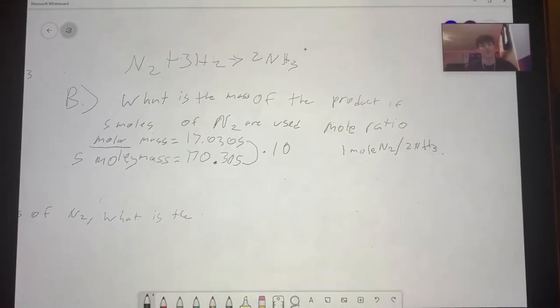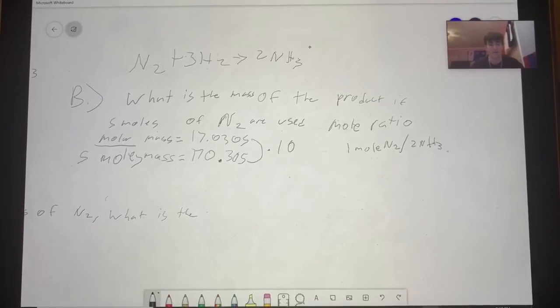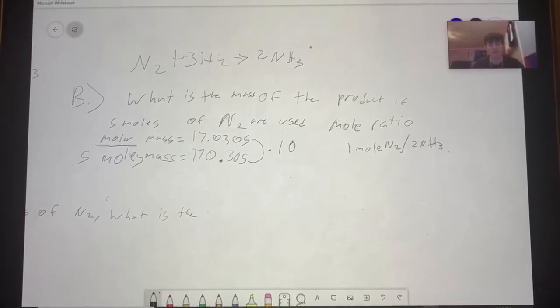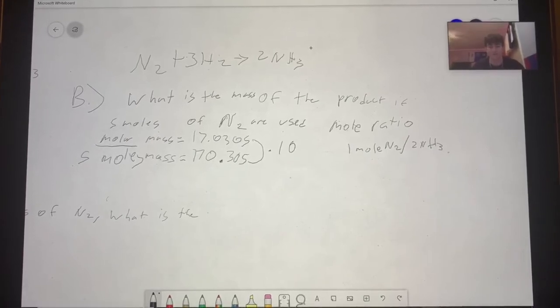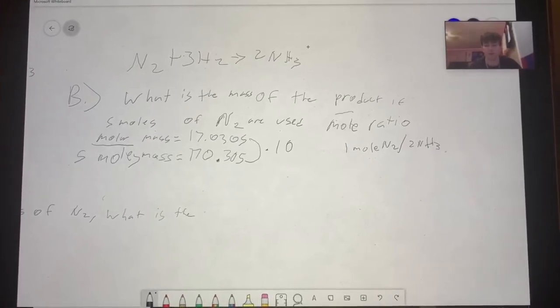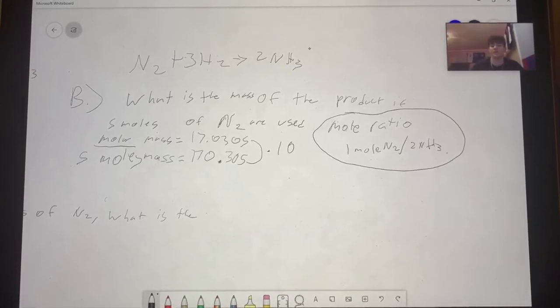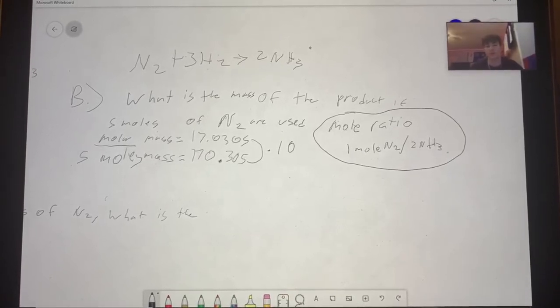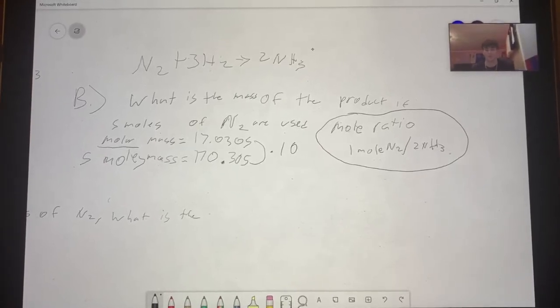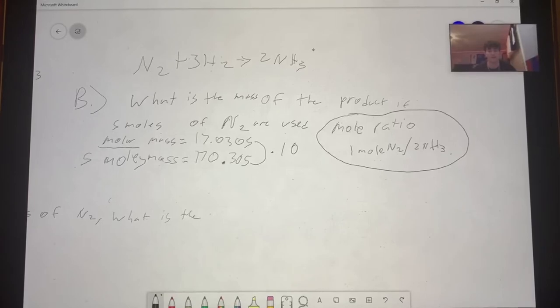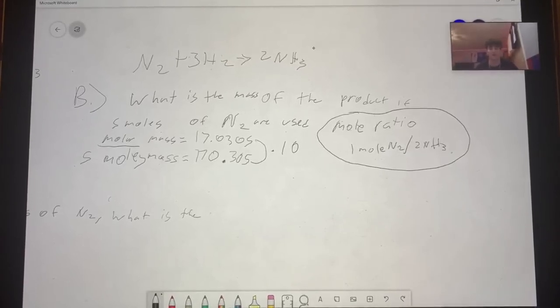In part B we are going to find the mass of the product if five moles of N2 are used as the reactant rather than only one mole. First we're going to find the mole ratio. The mole ratio is just a ratio that shows you your quantity balance.